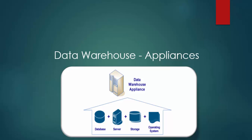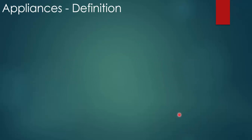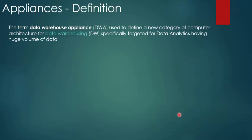So let's look at what data warehouse appliances are. As the picture shows, a data warehouse appliance is an out-of-the-box solution provided by a few vendors that includes databases, servers, storage, and operating systems. Data warehouse appliances can also be referred to as DWA. It is a computer architecture for data warehousing specifically targeted for data analytics having a huge amount of data.